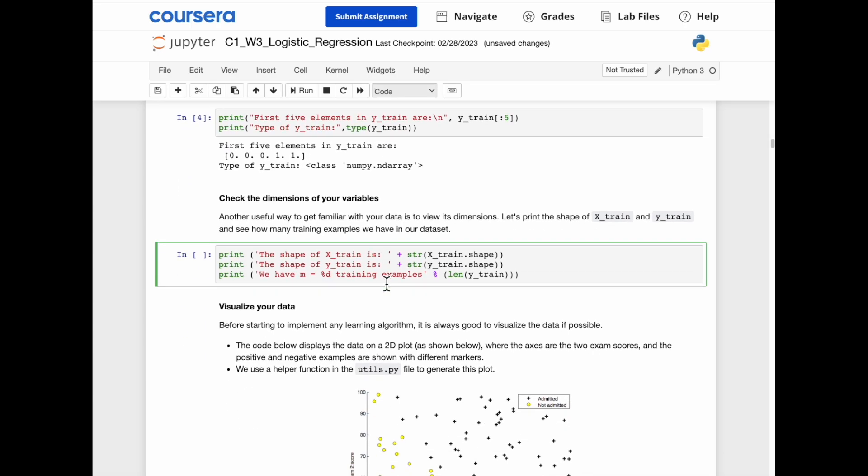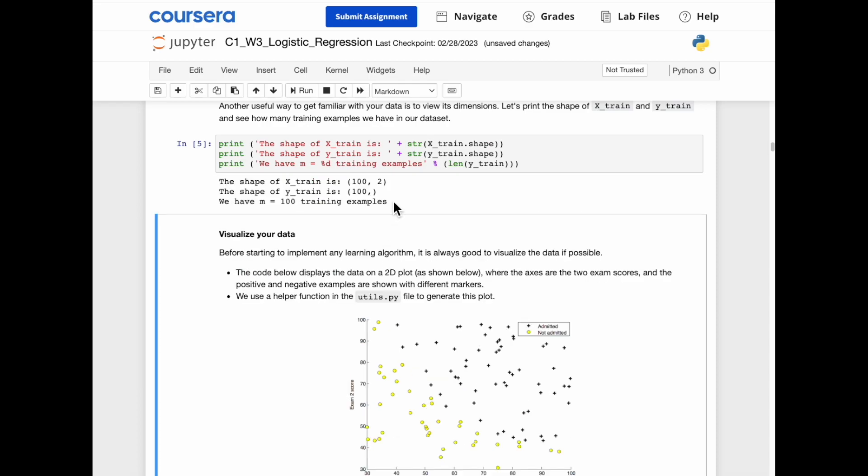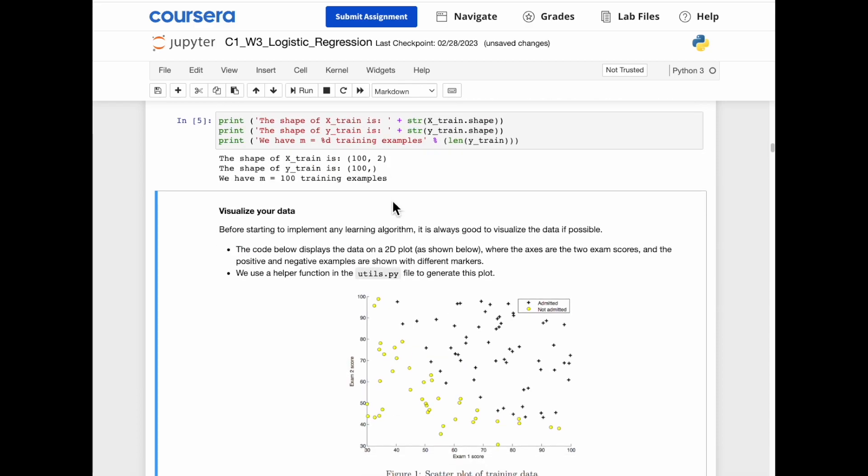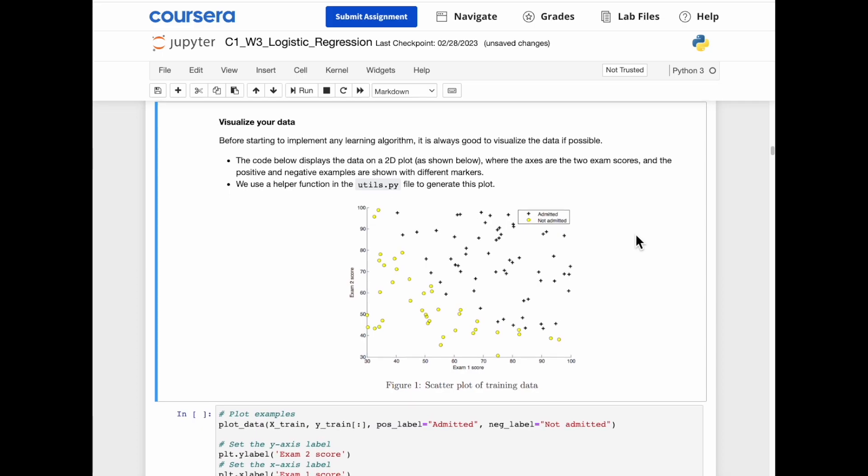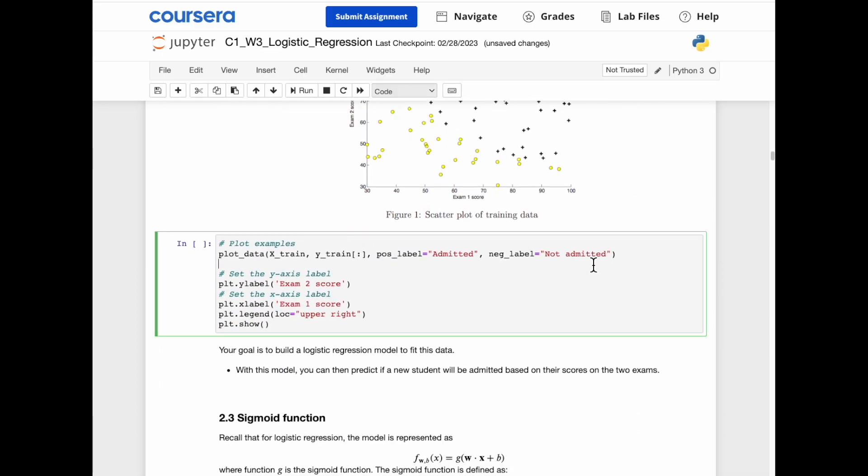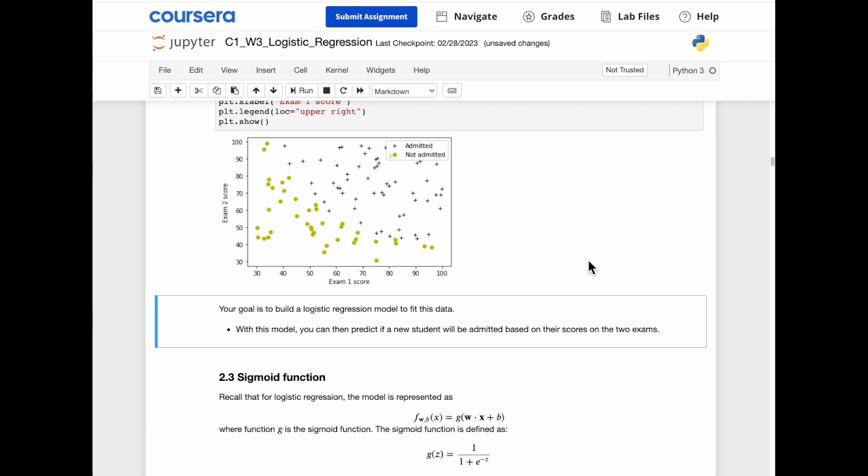The dimensions of our variables. We have 100 training examples. So it's a good idea to visualize our data. Yes, so the helper function is going to do this for us.